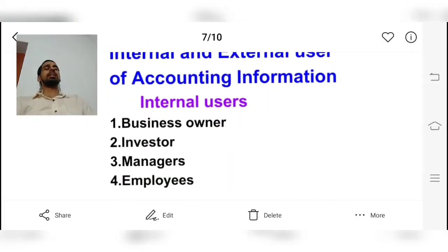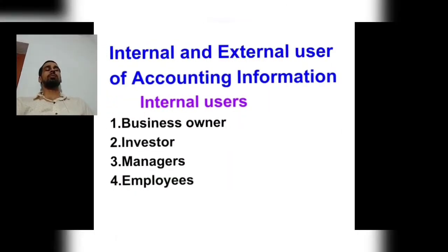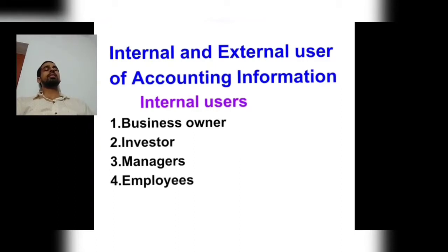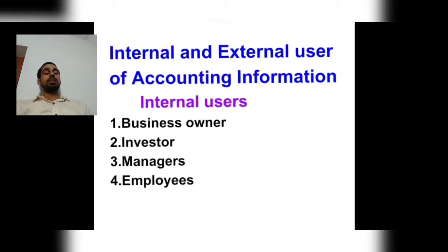Our first topic is Internal and External Users of Accounting Information — Bahya aur Antarik Upayogkarta. So among internal users, the first are business owners. Business owners are entrepreneurs who need accounting information, because on this basis they make decisions and determine policy. So business owner is the first internal user.